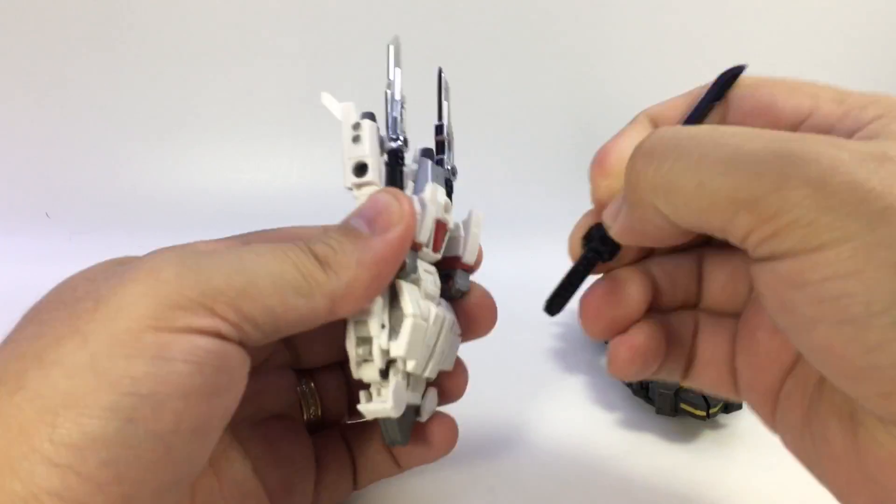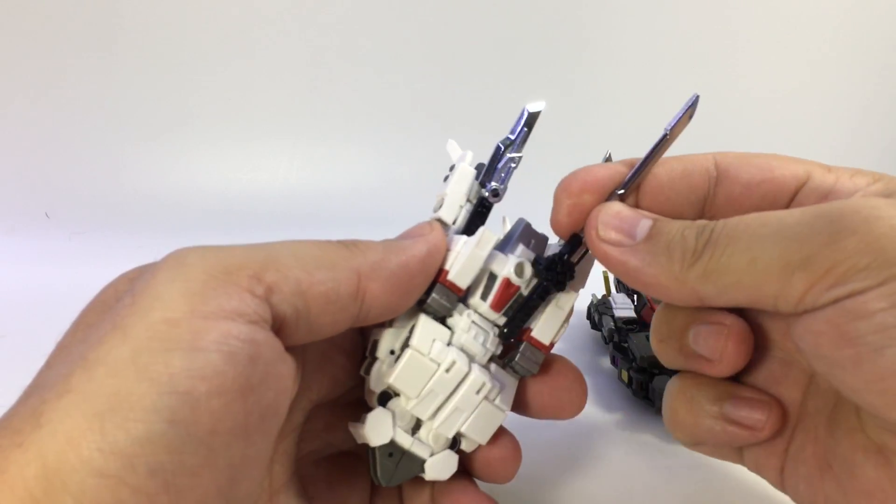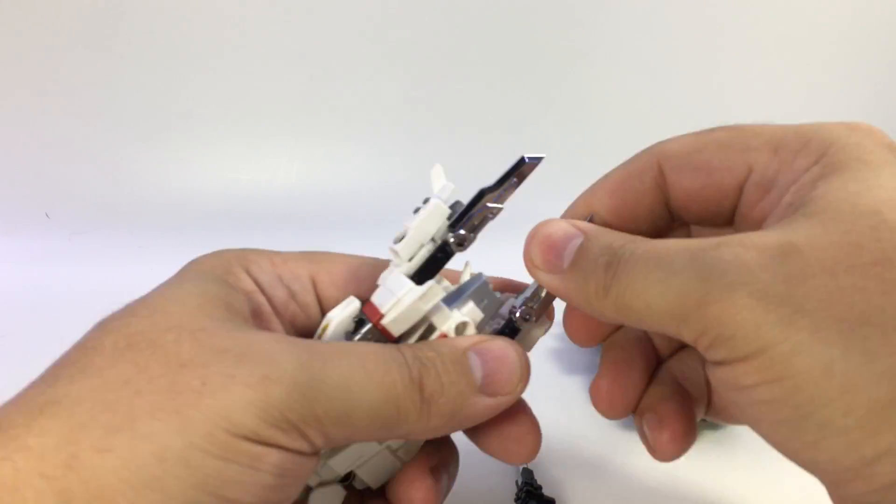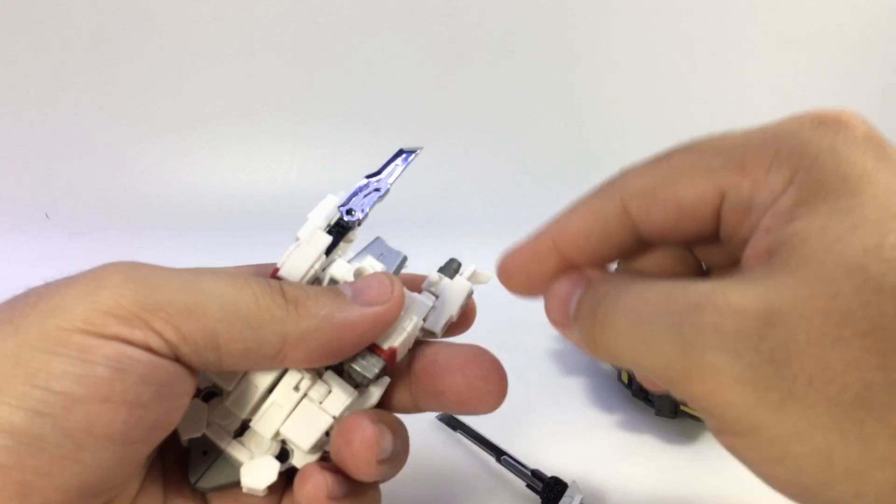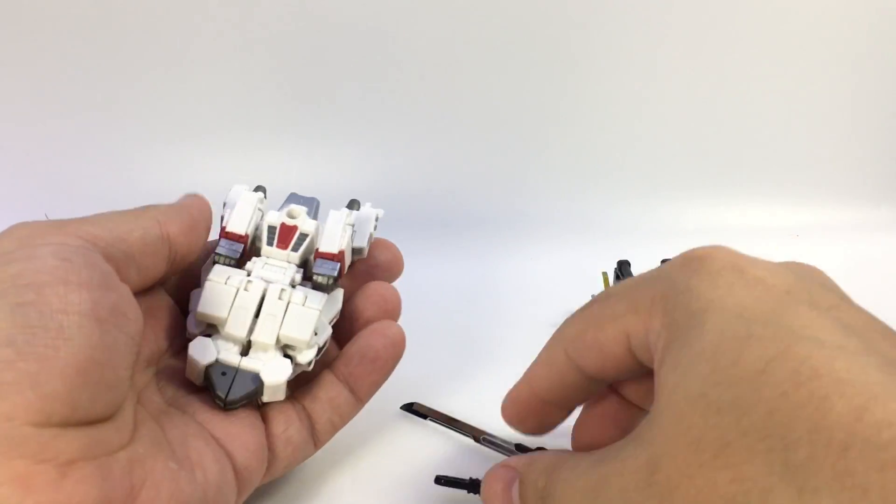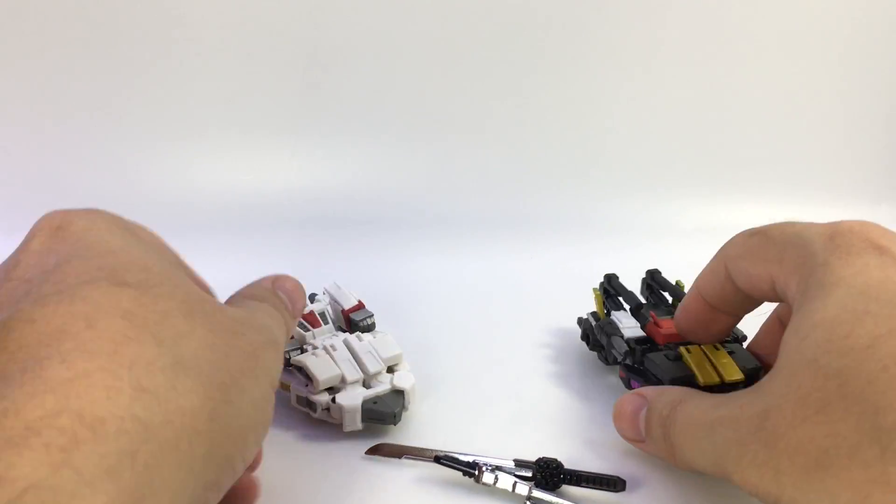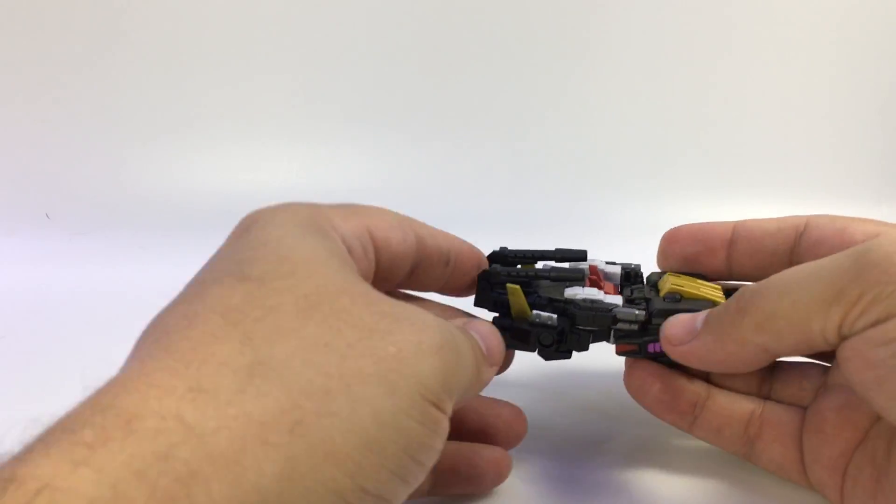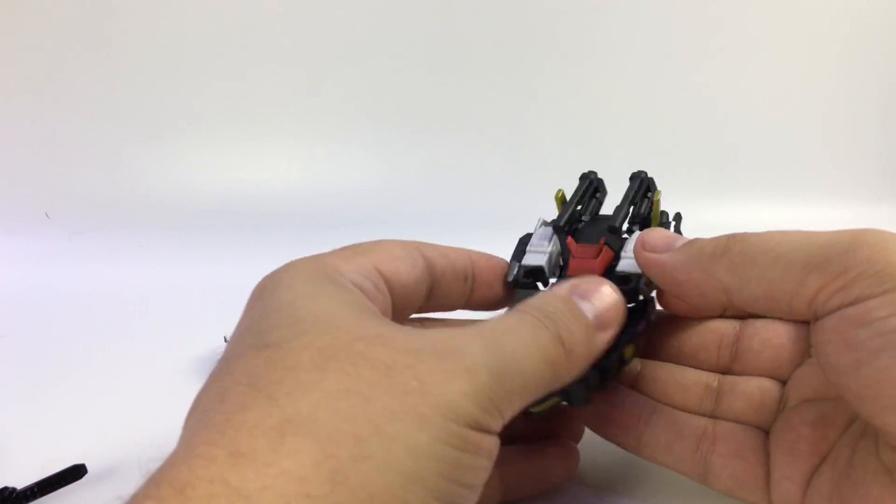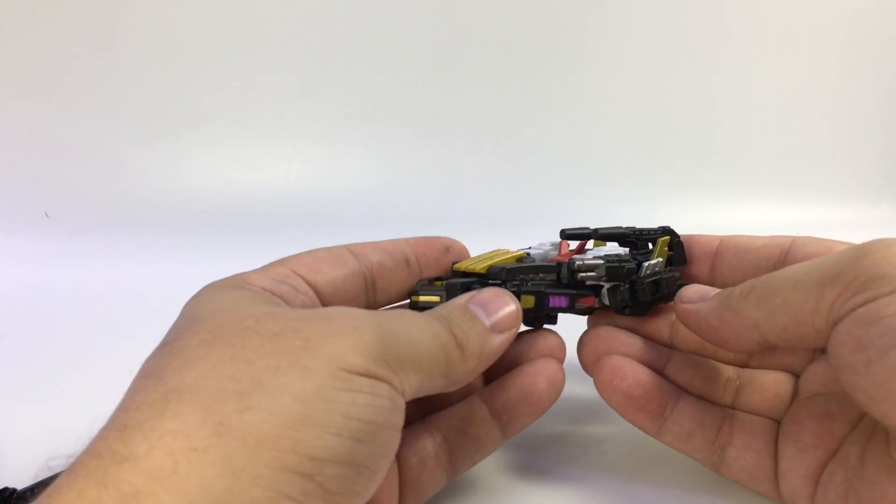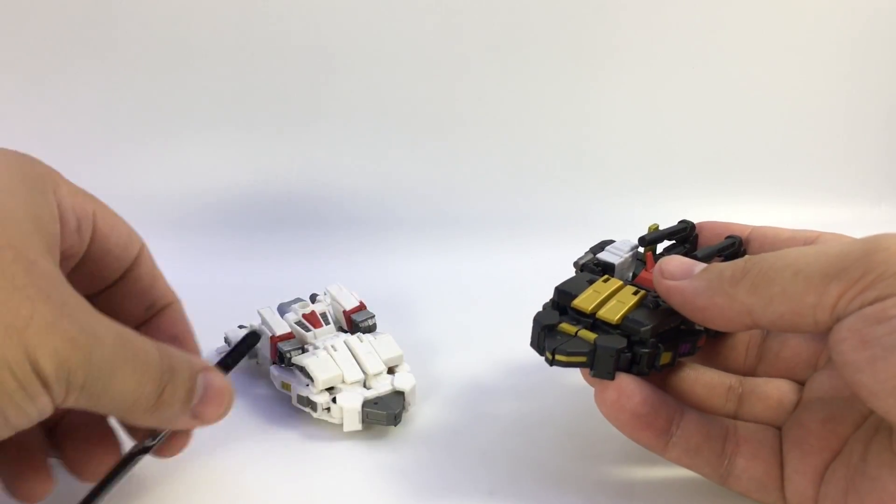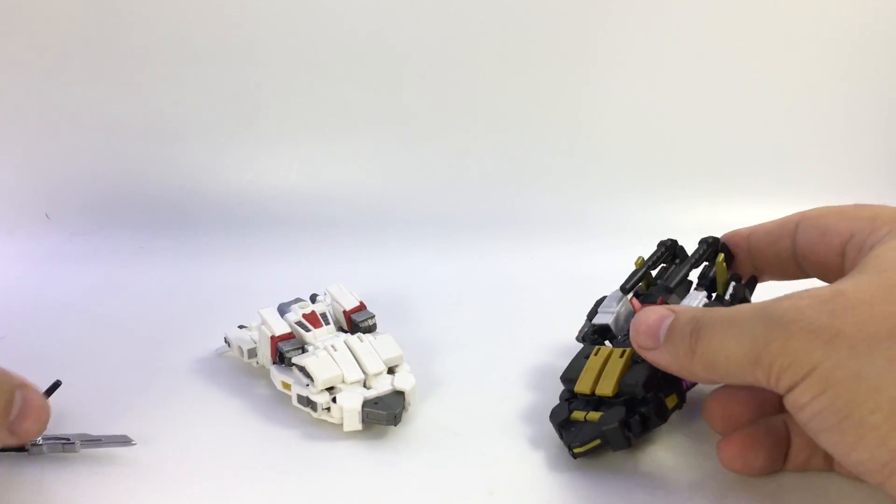You can take the weapons off. This sword just plugs in right here, and these are on little pegs here. Personally, I think the swords look weirder here on Noramune than the guns do on Muromasa. The guns here, the way they plug in, they actually look like they're part of the vehicle mode. The swords just look like swords pegged on to the sled.